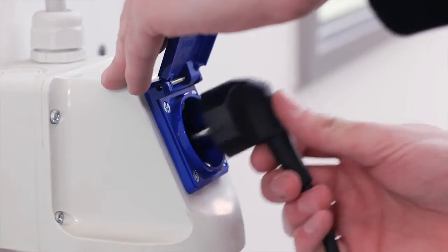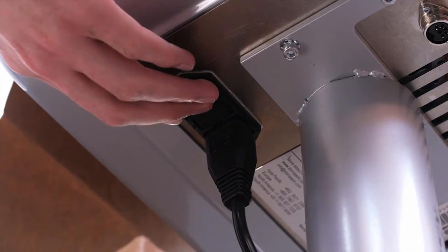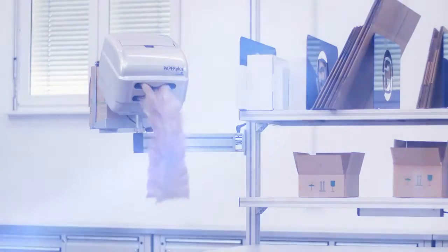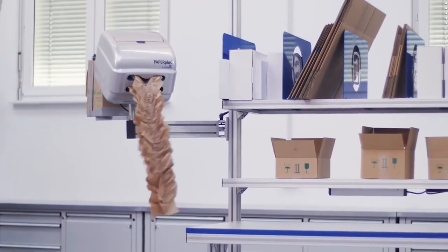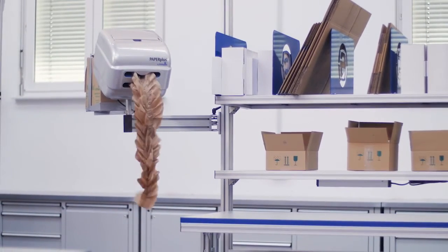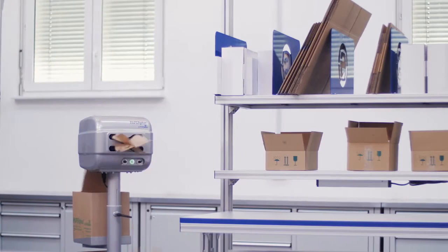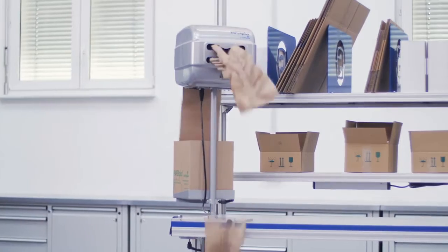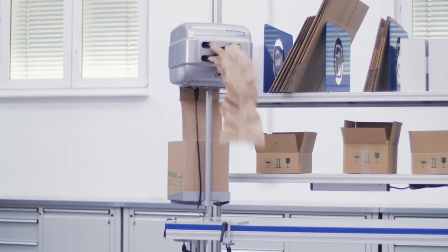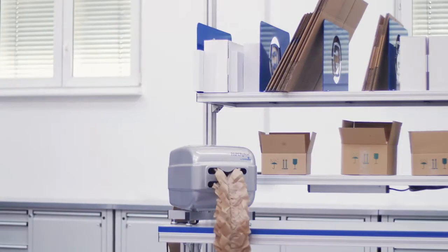The plug and play principle and the versatility of the Compact Paper Plus Papillon also allows simple and individual integration into every pack station. Therefore, the machine can be used on a floor stand or on a table or placed directly on the packing table without a stand.